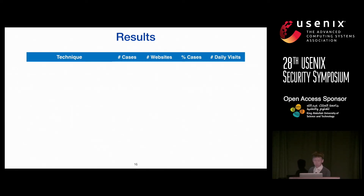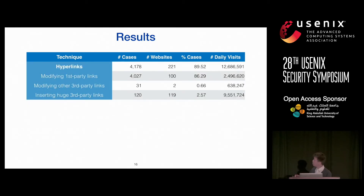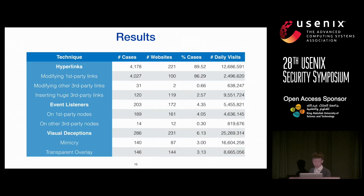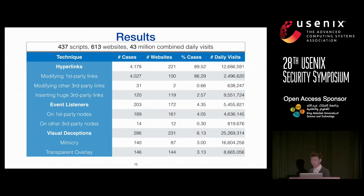The results are summarized in a table. We categorized results based on the techniques used to intercept clicks, number of cases, number of websites detected, and the percentage. The majority of click interception cases use ways to modify hyperlinks — especially modifying first-party hyperlinks via third-party JavaScript, which is clearly an abuse of privilege. We also detected event listener-based click interception and visual deceptions. In total, we found 400 unique scripts on over 600 websites, with a potential combined reach of 43 million daily visits.